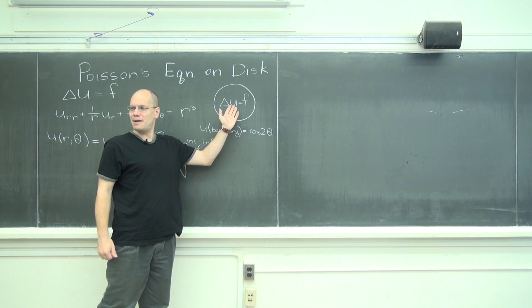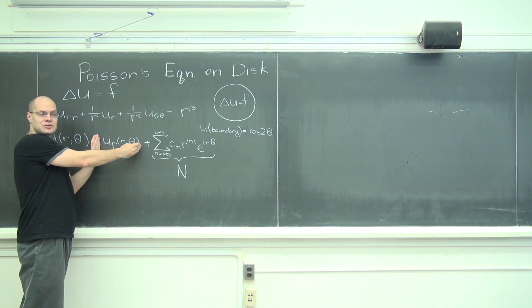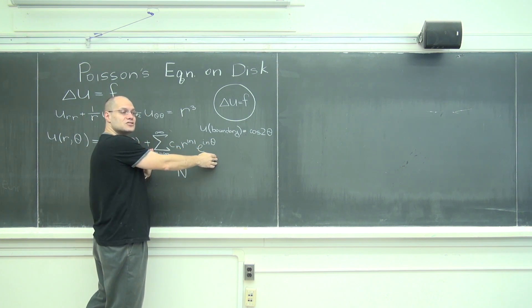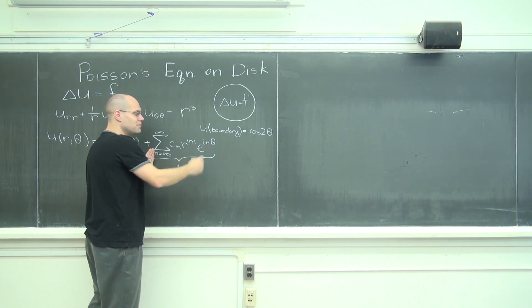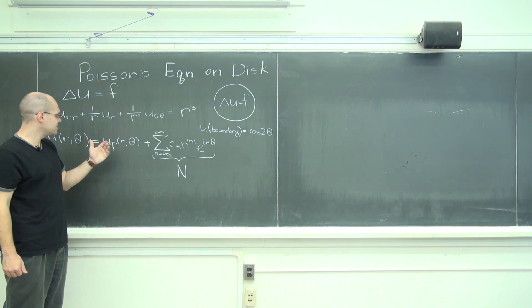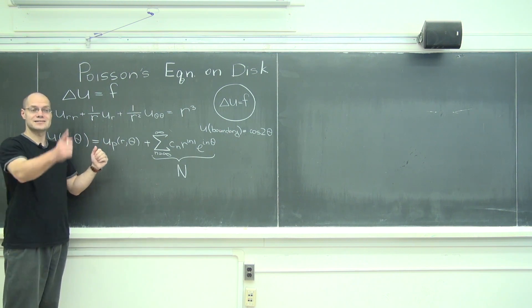And once I wrote this down you can see vividly that when we plug in R equals one, in other words we're looking at the value on the boundary, this one will produce some values on the boundary. So like I just said a moment ago, what this series needs to do for us is to match that differential between what we actually need to have and what this particular solution will give us on the boundary. Okay, so yes.